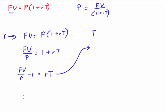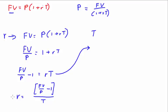To get the simple interest rate on its own, divide the left side by time. So: r = (FV/P − 1) ÷ T. Make sure the bracket is calculated first — future value divided by principal, minus one — then divide that whole result by time. That gives you your simple interest rate.